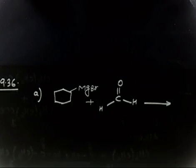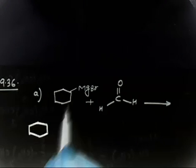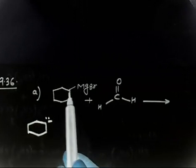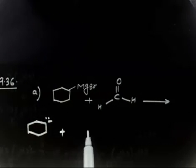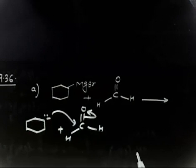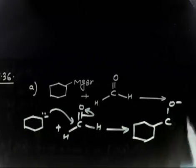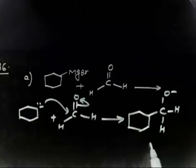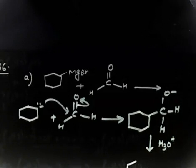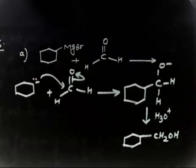You have to treat the Grignard reagent as a nucleophile. This is a carbanion with a negative charge. Everybody knows this has delta plus on Mg and delta minus on carbon. This nucleophile attacks on the carbonyl carbon. After the attack, you have C-O minus with two hydrogens. After hydrolysis with H₃O⁺, the O minus converts to OH, so you get the product with CH₂OH.